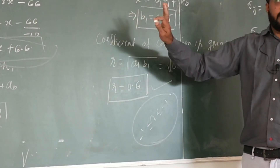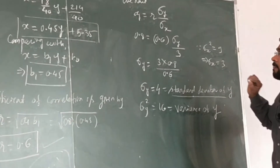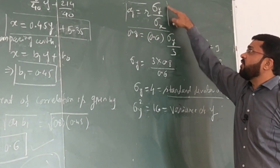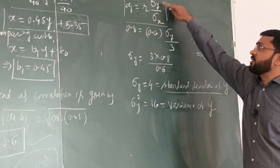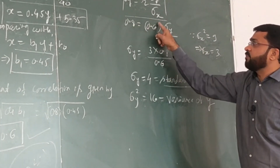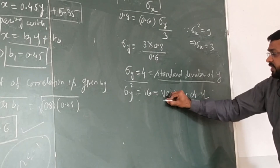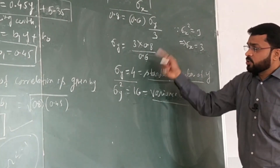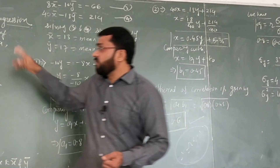To find the standard deviation of y, we use the regression coefficient formula for y-on-x: a1 equals r times sigma y divided by sigma x. We know a1 is 0.8, r is 0.6, and sigma x equals 3 (since sigma x squared equals 9). Solving gives sigma y equals 4. The variance of y is sigma y squared equals 16. This completes the solution for all four required quantities.